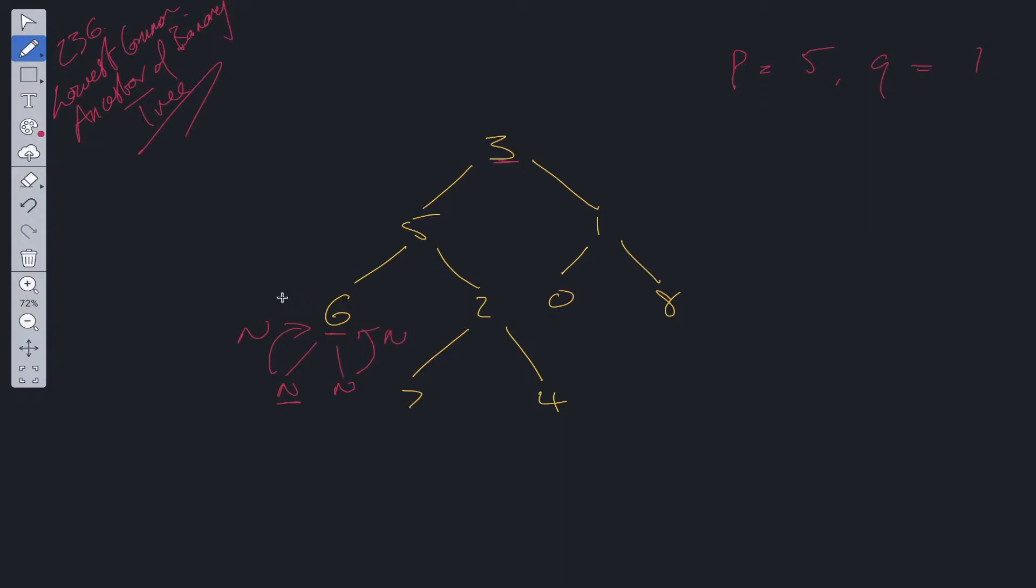Then we can do a check here. We check to see whether P and Q is present. If it is, we return this value—we'll return root. But in this case it's not, so what do we return up? We return null up to 5.